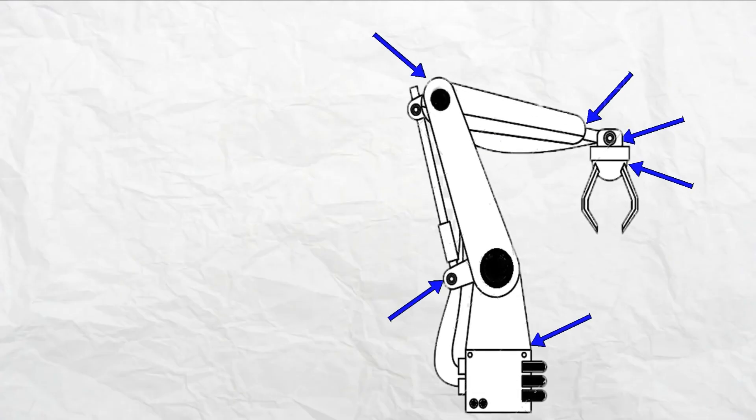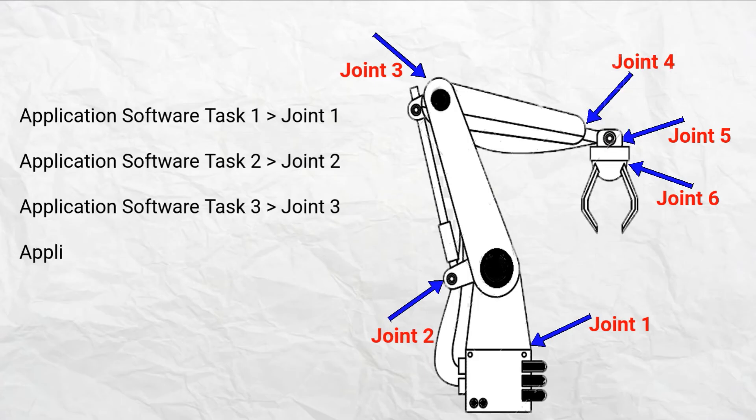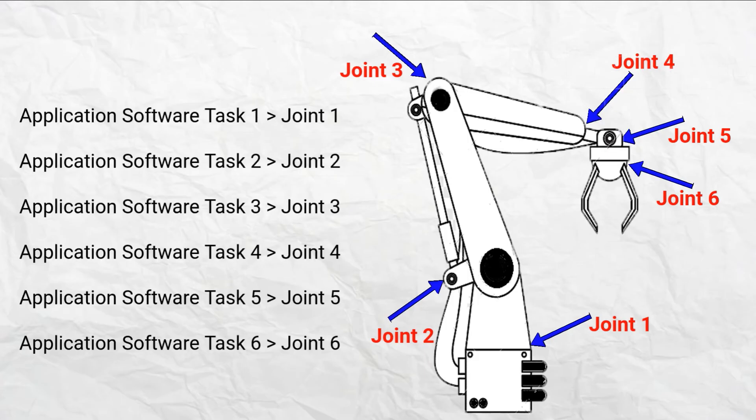Take this example: a robotic arm having, let's say, six joints which are also called axes which need to be controlled accurately. In this case, you would be required to separate the application functionality into multiple tasks, each task or thread controlling each joint or axis of the robotic arm.